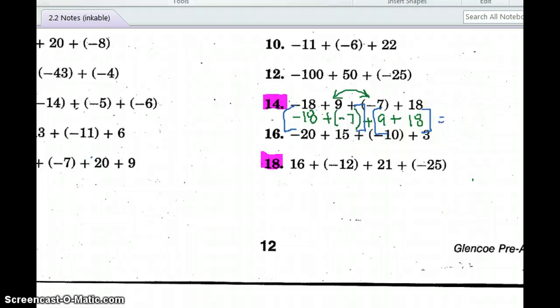Let's put negative 18 plus a negative 7 plus 9 plus 18. Use the commutative property with these two numbers. And then we're going to associate negative 18 and negative 7, 9 and 18. So negative, negative, I'm adding 18 and 7, and that's going to give me 25. They were both negative, so it's a negative 25 plus 9 and 18 is going to give me 27. So now I have opposite signs, so I have to subtract and keep the sign of 27, so it's going to be a positive 2.